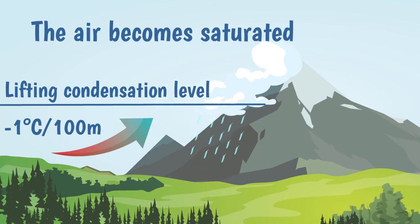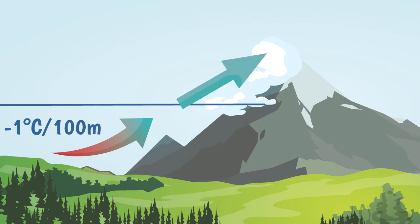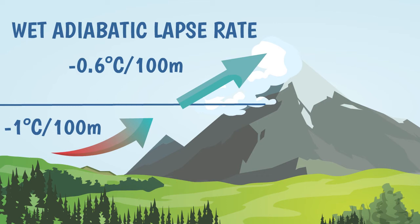The elevation at which this happens is known as the lifting condensation level. Because condensation causes latent heat to be released, as the air rises above the condensation level, it keeps on cooling adiabatically, but at a much slower rate, since part of the cooling effect linked to expansion is offset by heat released by condensation. So instead of cooling 1 degree every 100 meters, the rate drops by almost half to approximately 0.6 degrees per 100 meters. This reduced rate of cooling is known as the wet adiabatic lapse rate.